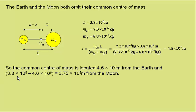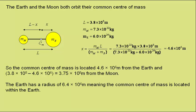And 3.8 × 10^8, which is their total separation, minus that distance, which gives us 3.75 × 10^8 metres from the Moon. The Earth has a radius of 6.4 × 10^6 metres, and this means that the common centre of mass of the Earth-Moon system is located within the body of the Earth.